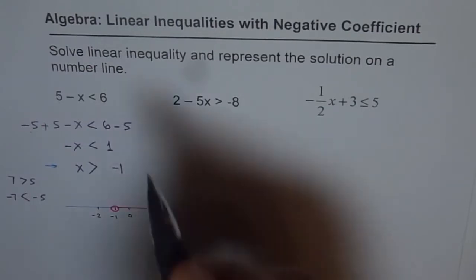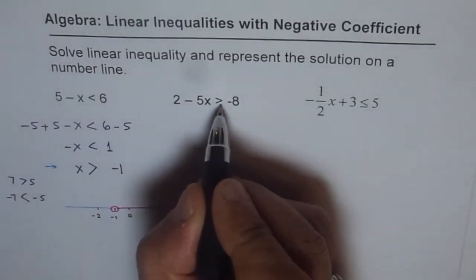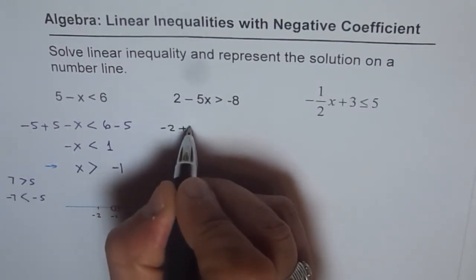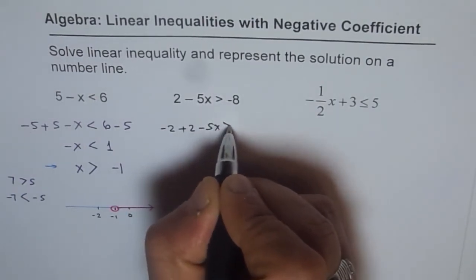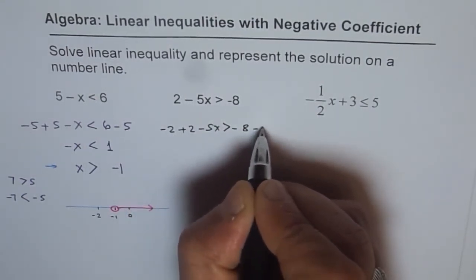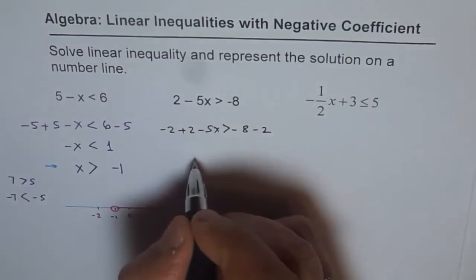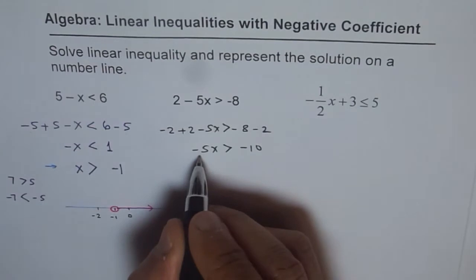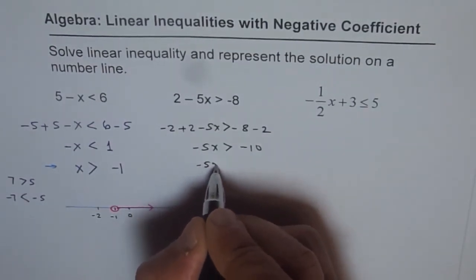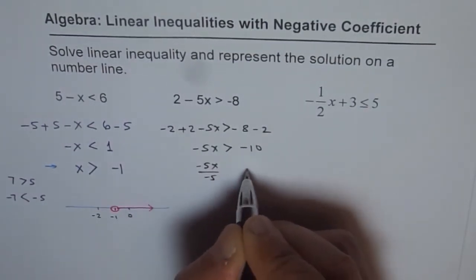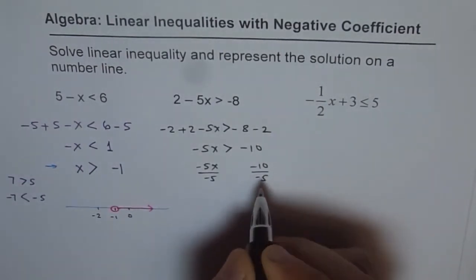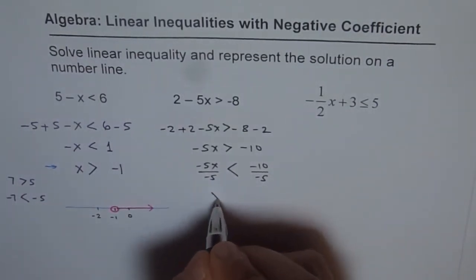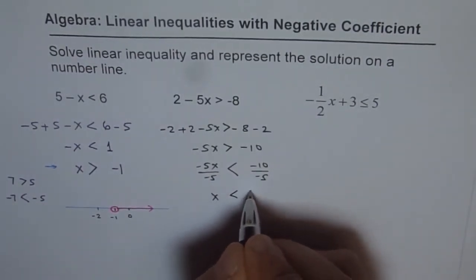Let's do the next one. 2 minus 5x is greater than minus 8. So we have to take away 2. So we get minus 2 plus 2 minus 5x is greater than minus 8 minus 2. That leaves us with minus 5x is greater than minus 10. And we'll divide by minus 5 this time. So what do I get? Minus 5x divided by minus 5, minus 10 divided by minus 5. And we should change the sign. That is important. So we get x is less than 2.